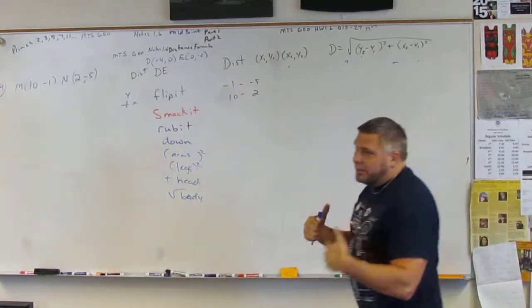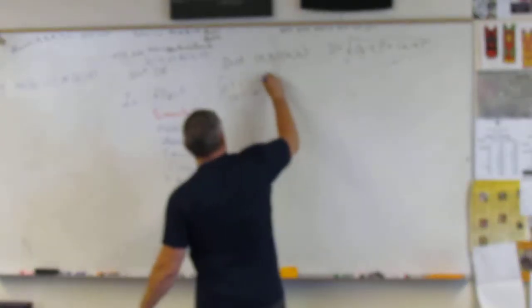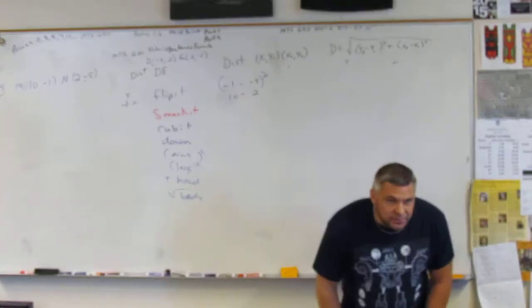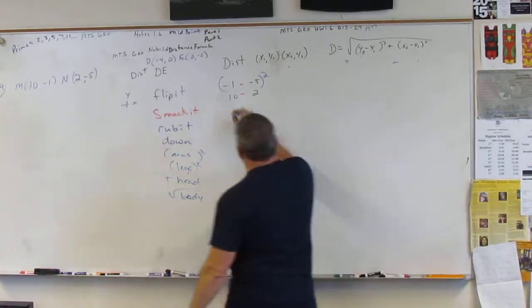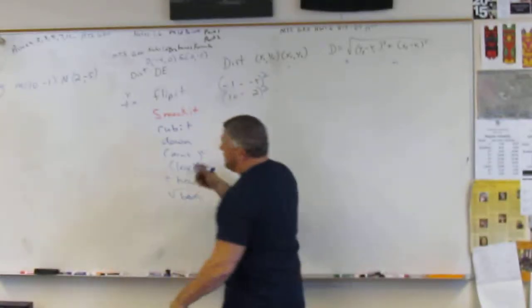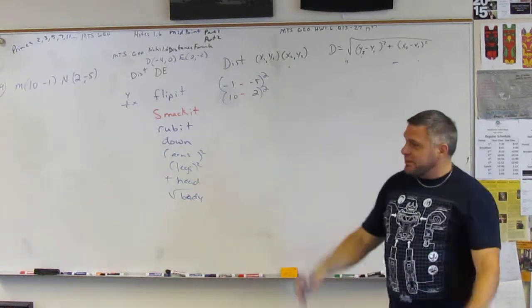How many arms we got? 2, 2 arms. How many legs? 2 legs. How many heads? 1, that's a plus.